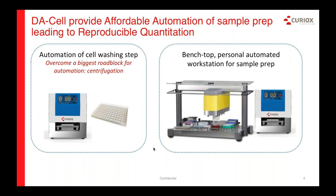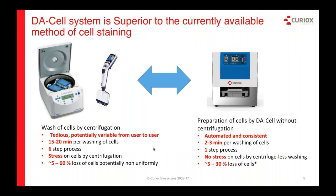We've introduced the DA cell washer — DA for DropArray — to wash cells in a 96-well format and remove user variation that occurs during centrifugation, aspiration, or flicking. We are working on the next generation, which will be a fully automated workstation including addition of reagents to cells, incubation, and essentially surface staining and/or intracellular staining protocols from start to finish. In a conventional wash process, scientists use a centrifuge and a multi-channel pipette; two centrifugations take 15 to 20 minutes. In contrast, DA cell completes the entire wash automatically in two minutes without centrifuging the cells, so cells do not experience any external forces or stress.